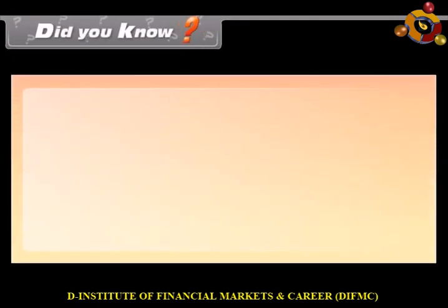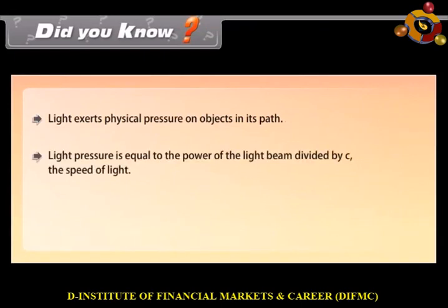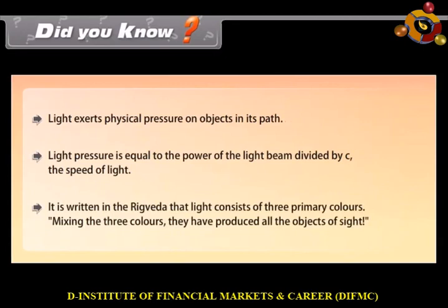Did you know: light exerts physical pressure on objects in its path. Light pressure is equal to the power of the light beam divided by c, the speed of light. It is written in the Rig Veda that light consists of three primary colors, and by mixing these three colors, all the objects of sight are produced.